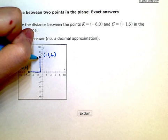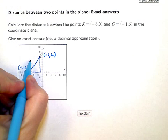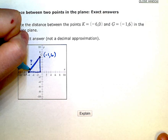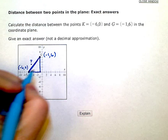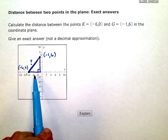So if I go ahead and draw in a right triangle here, this is the distance I want to know, the distance directly connecting the two points. But if I make a right triangle out of this, then I can use Pythagorean theorem, but I need to know what these two legs of the triangle are.